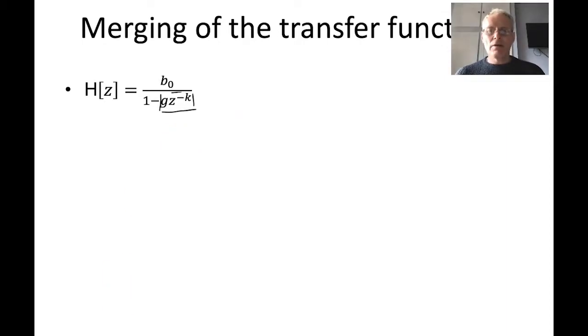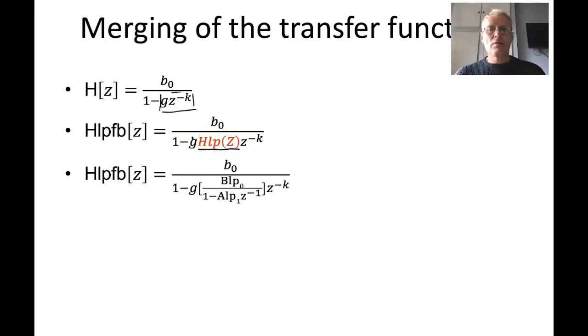If we do that, then what we get is this. This is just the transfer function of the low-pass, which I haven't expanded out yet. This is just to show you the entire process. We're multiplying the transfer function of the low-pass filter with the gain coefficient and the feedback term. Then we're going to expand out, and we're starting to get algebra that we need to try and simplify and solve.